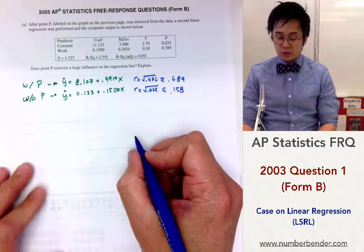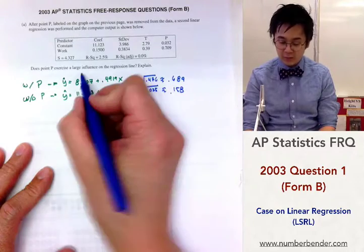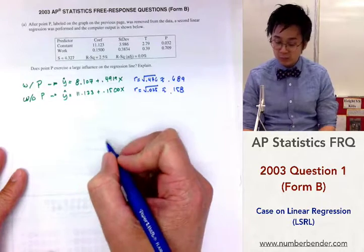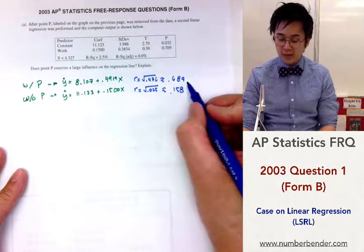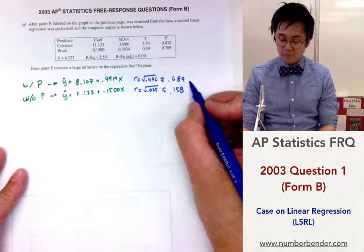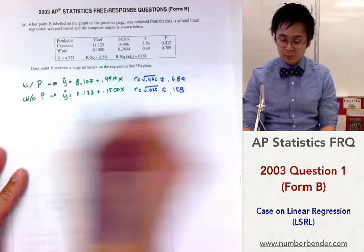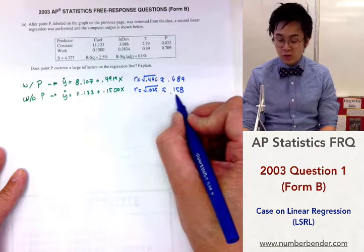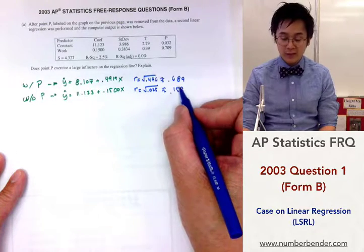So with this, we'll be able to construct our answer on the influence of point p in our linear model. You will notice that when it comes to the correlation coefficient, we have a stronger correlation for our relationship with p. And without the p, our correlation coefficient becomes less strong at .158.